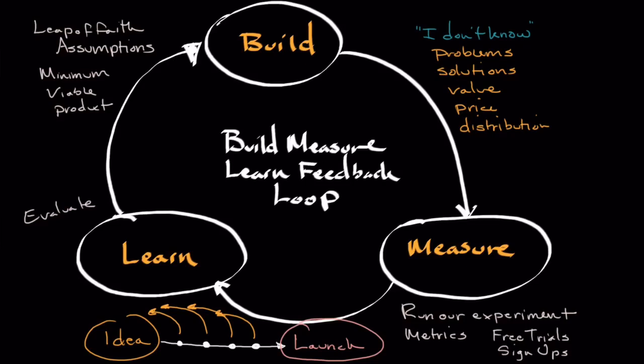We're going to make a decision about whether the assumptions we identified in the first stage held to be true. Did our assumptions survive? If not, we go back and retool. Maybe we run a different experiment, or maybe our assumptions were inaccurate and we have to pivot—make a change to our business in some way.